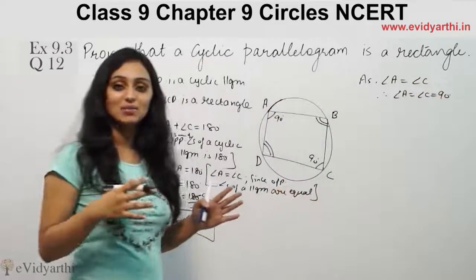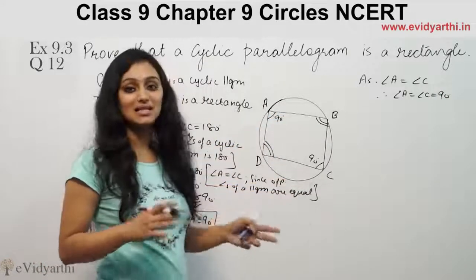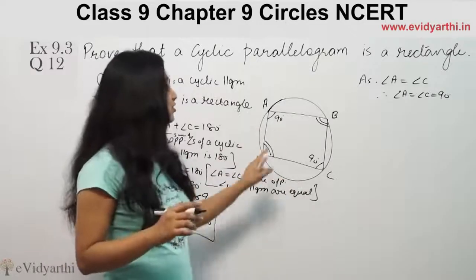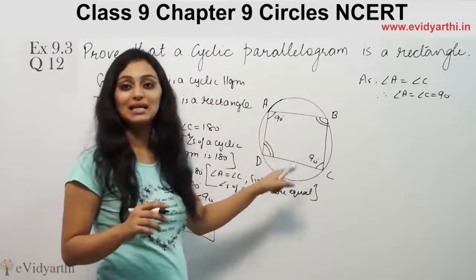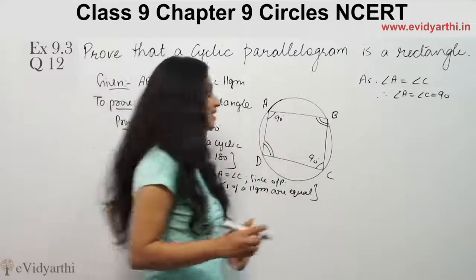Similarly, all angles are 90 degrees. The difference between a parallelogram and a rectangle is that a rectangle has all angles equal to 90 degrees. Since we've proven all angles are 90 degrees, it is a rectangle.